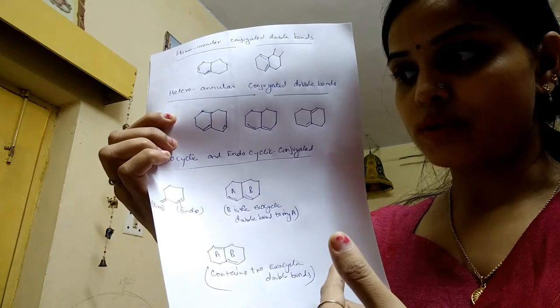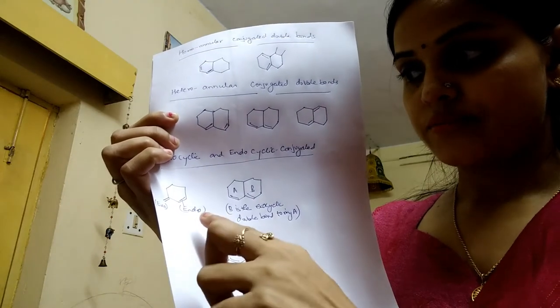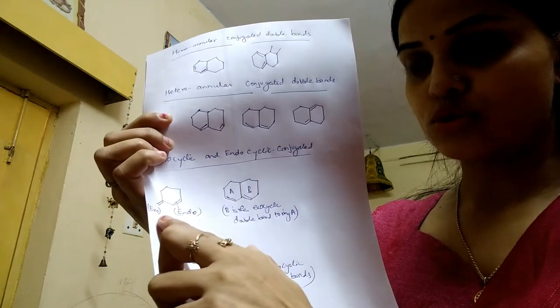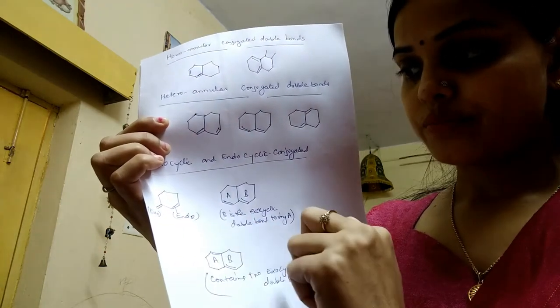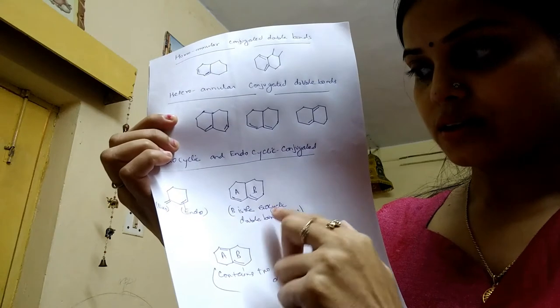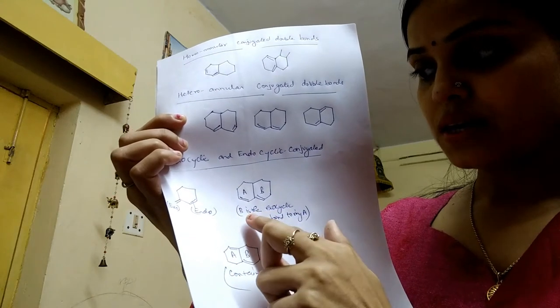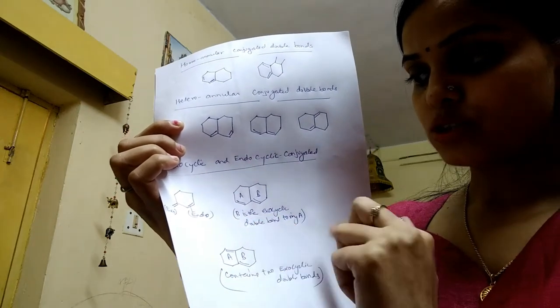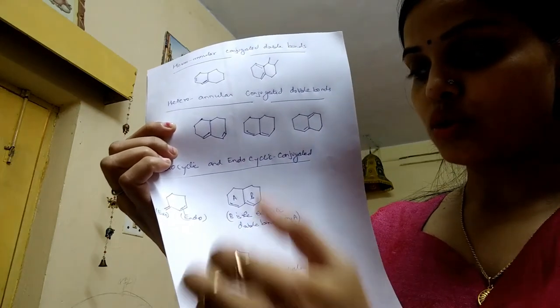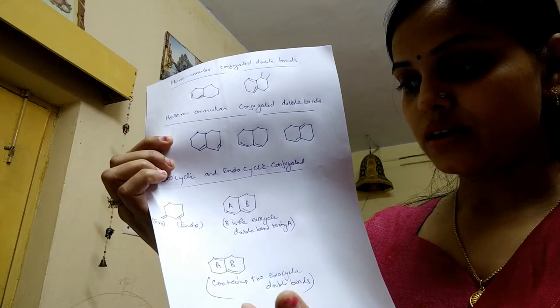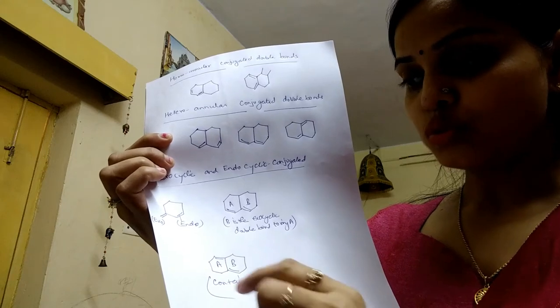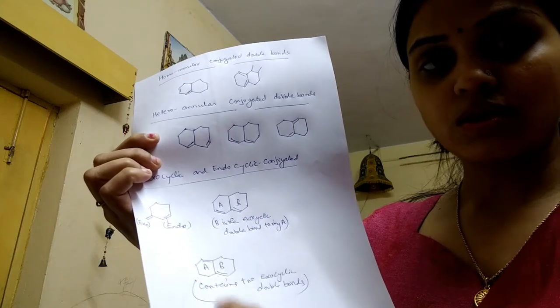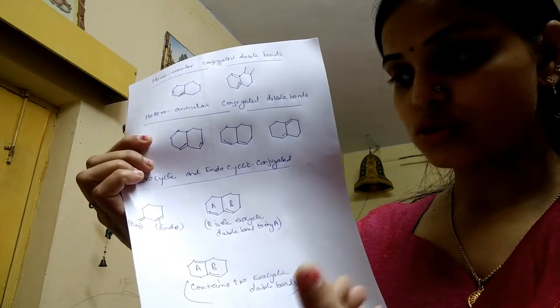These types of double bonds are shown in the following figure. These are examples of exocyclic bonds — this is the exocyclic bond to the ring, here B is the exocyclic double bond to ring A, and here both double bonds are exocyclic to each other.